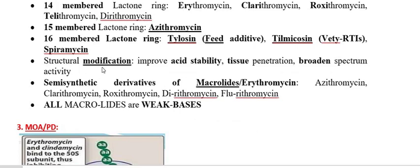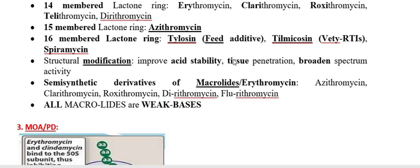When structural modification occurs in erythromycin, we get semi-synthetic derivatives: clarithromycin, roxithromycin, and azithromycin. The main purpose of obtaining semi-synthetic antimicrobial agents is that they must have better qualities than erythromycin. The improved qualities include acid stability, better tissue penetration for treating most infections, and a broader spectrum of activity covering many bacteria.